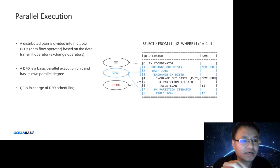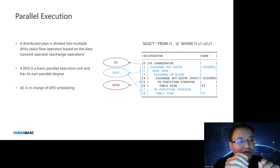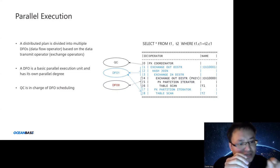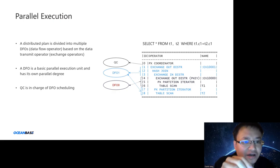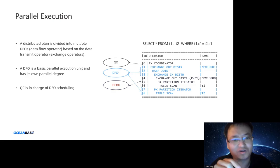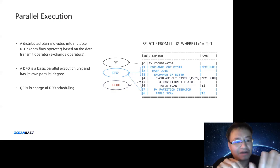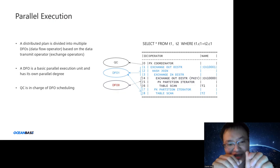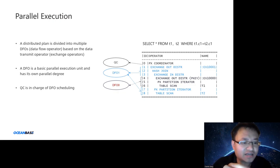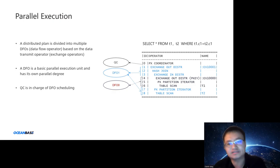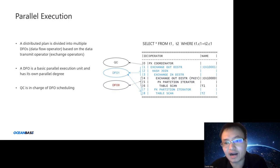In our parallel execution framework, we have a distributed plan divided into multiple DFOs (Data Flow Operators) based on data transmit/exchange operators. Exchange operators shuffle data between machines. Our parallel execution framework is similar to Oracle's. A DFO is a basic parallel execution unit with its own parallel execution in one OceanBase server, and the query coordinator handles DFO scheduling.